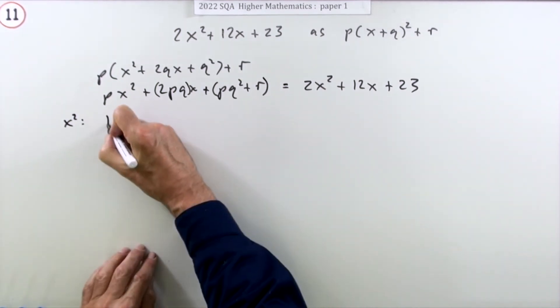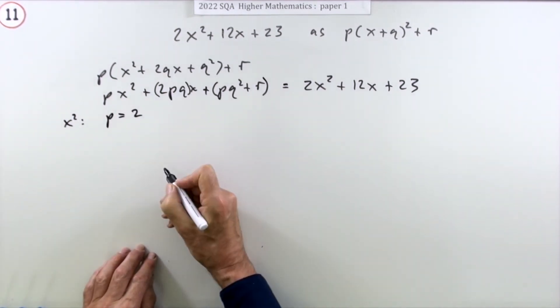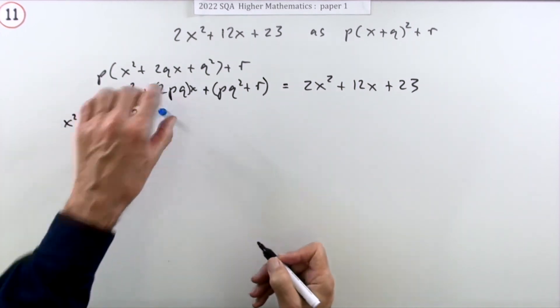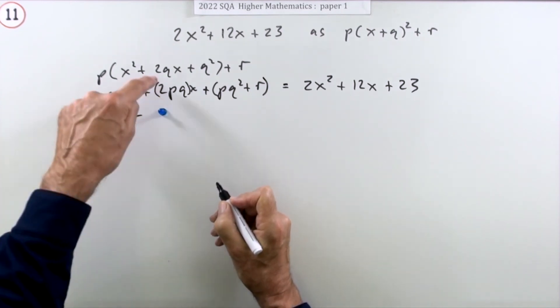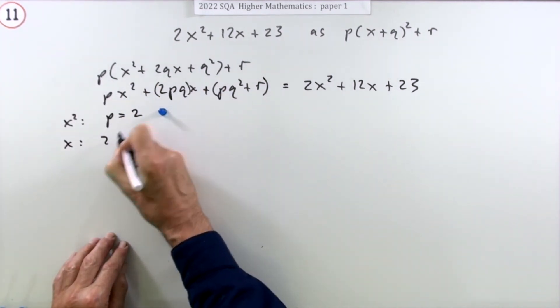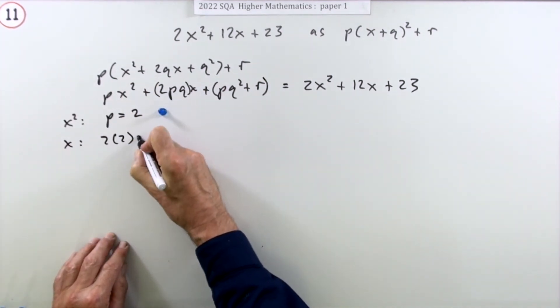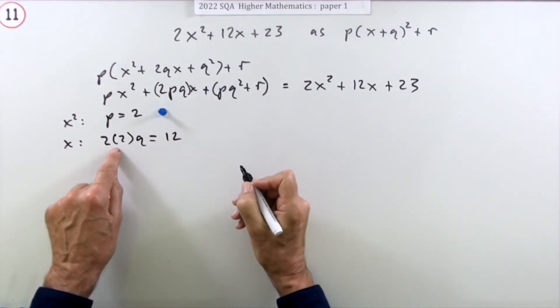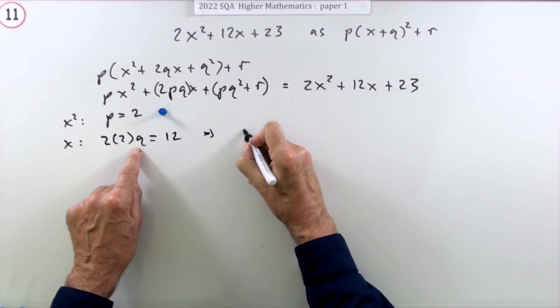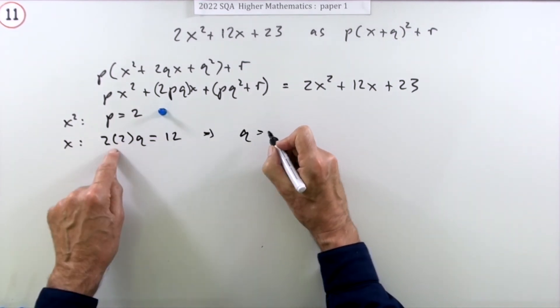So equating the different parts: if you take the x² terms, the number in front of x² should be the same, so immediately you've got p = 2. There's a mark, not until you put in the final answer though. The x terms: 2pq, well I know what p is, that's a 2, so 2×2×q should be the same as 12. That's 4q = 12, so that means q must be 12 divided by 4, which is 3.